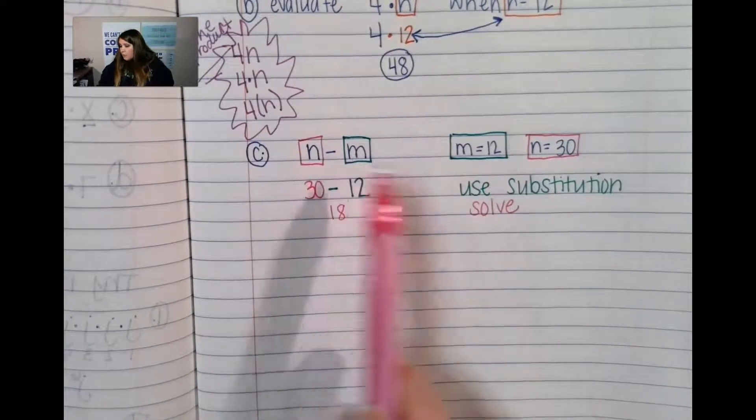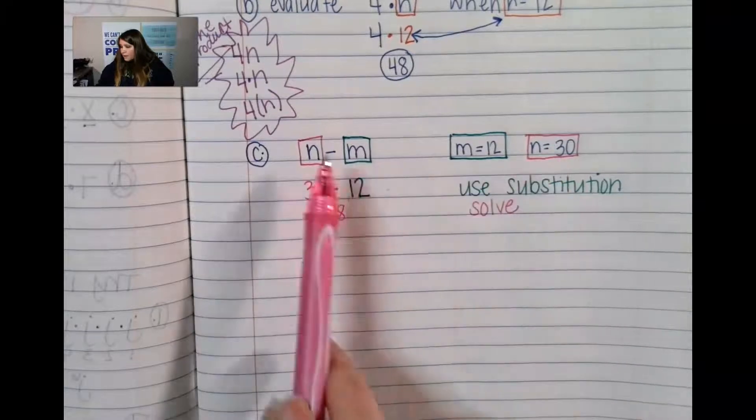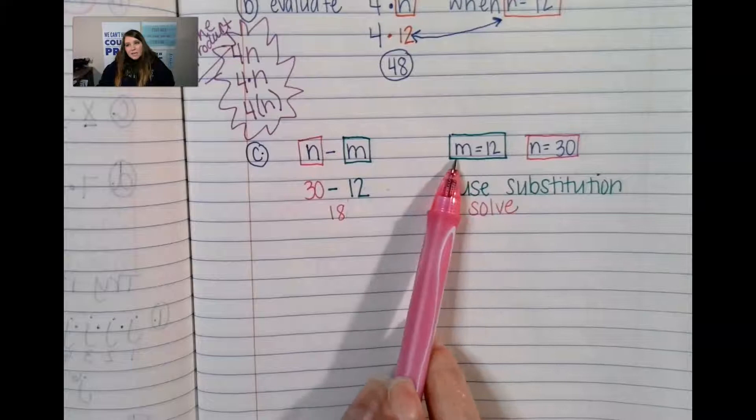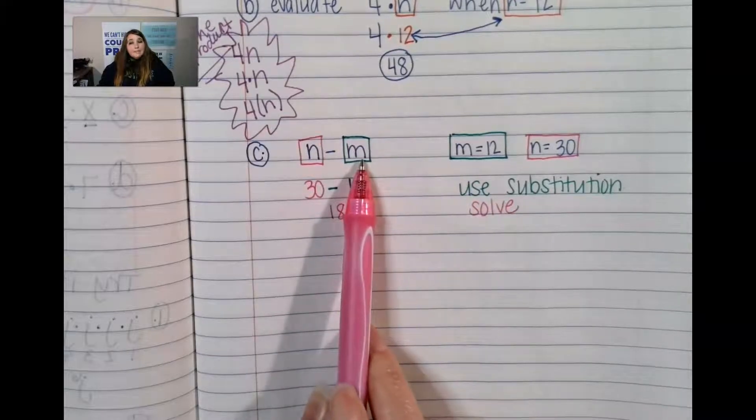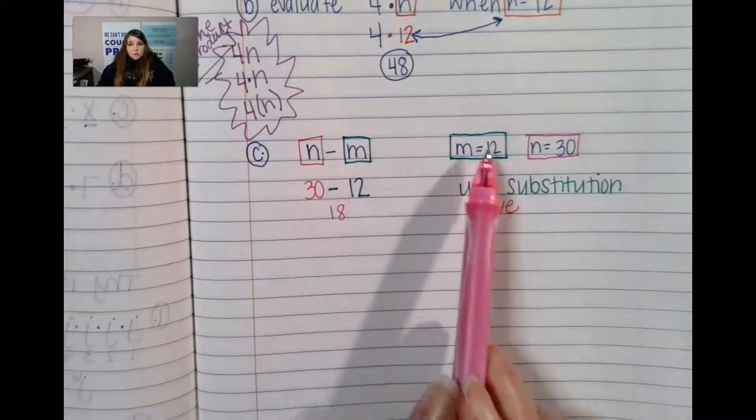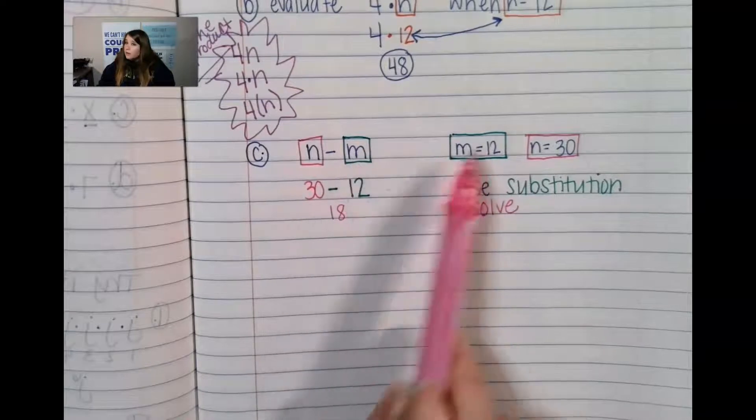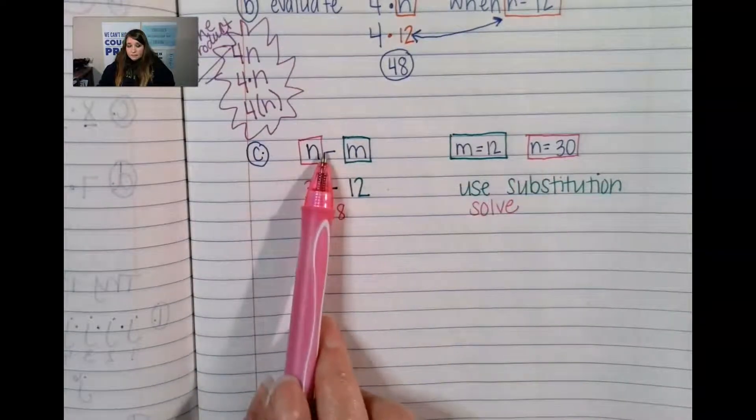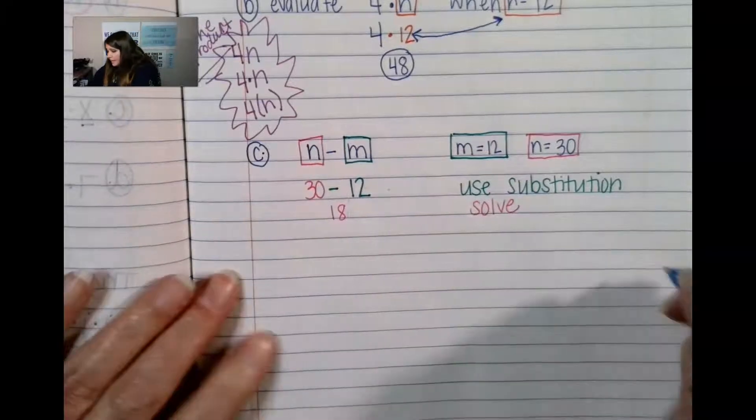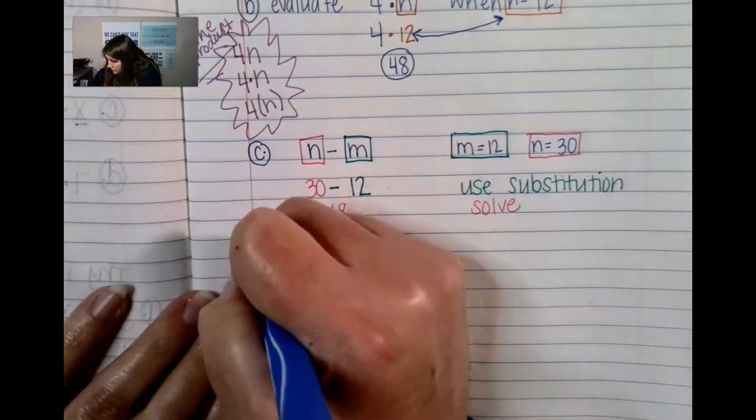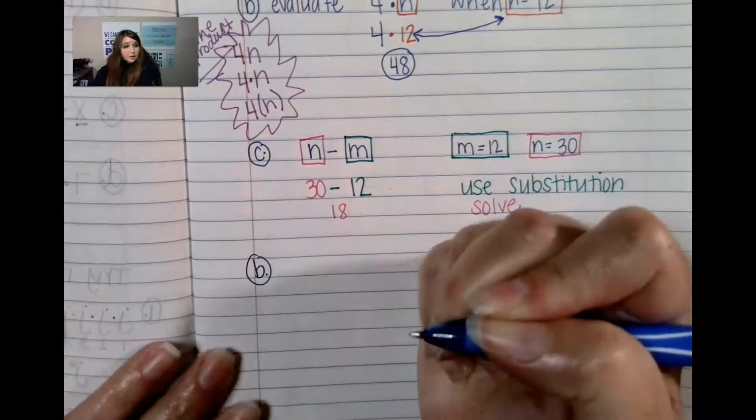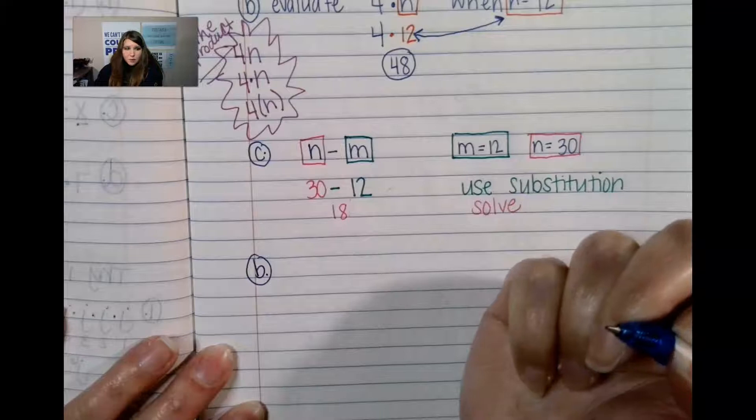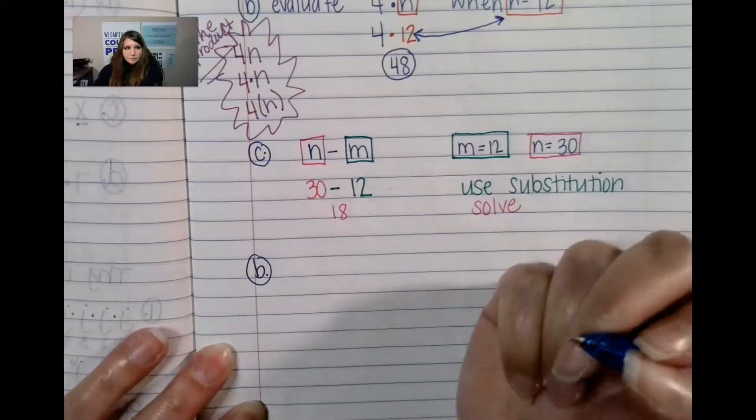Just matching up the number for the letter. Be really careful because if you noticed, the m came first here, but the m came second over here. So it's really kind of got to just really be careful and go slow and steady. All right, the next problem that they give us.